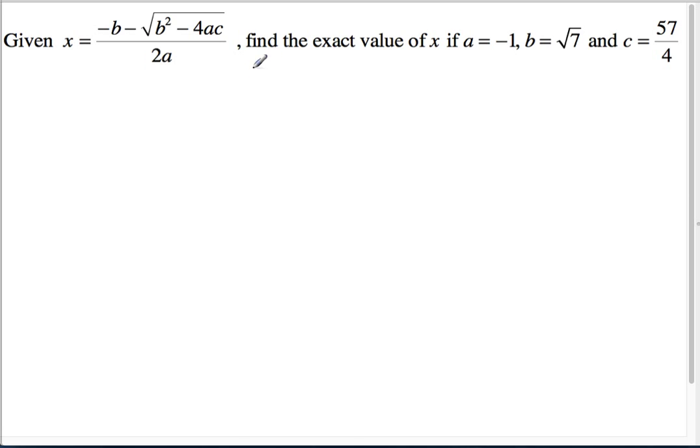Our task is to find the exact, look at that bold word exact, exact value. That's usually a hint that there's an irrational number in the final answer. If a equals negative 1, be careful with that negative sign, b is a square root and c is a fraction, all kinds of messy stuff happening here, but let's get started and see how far we go.